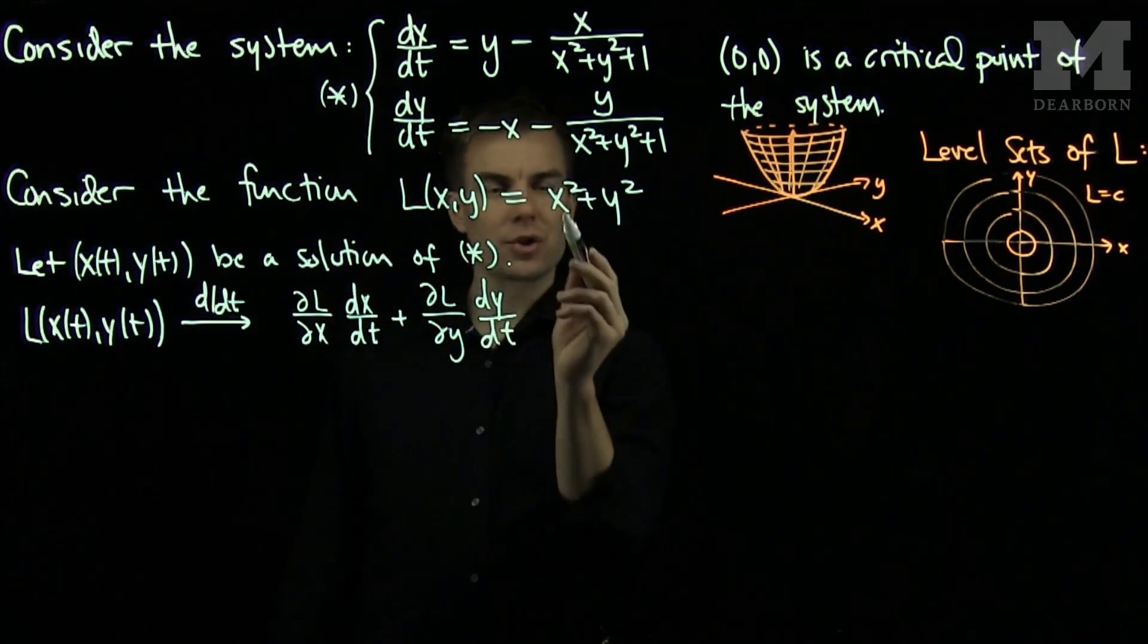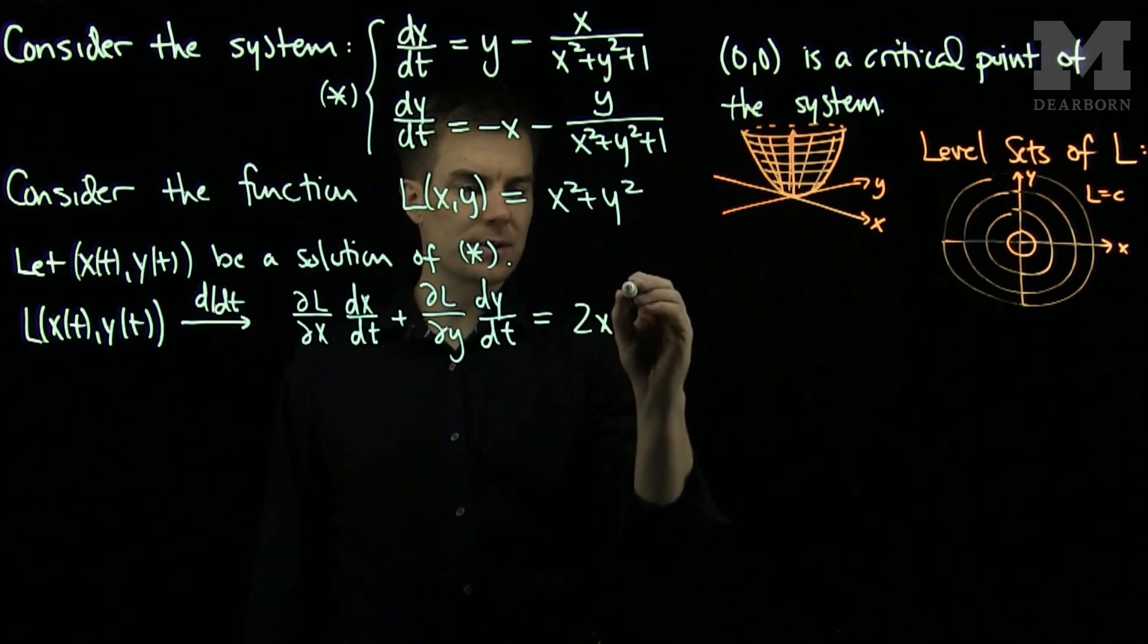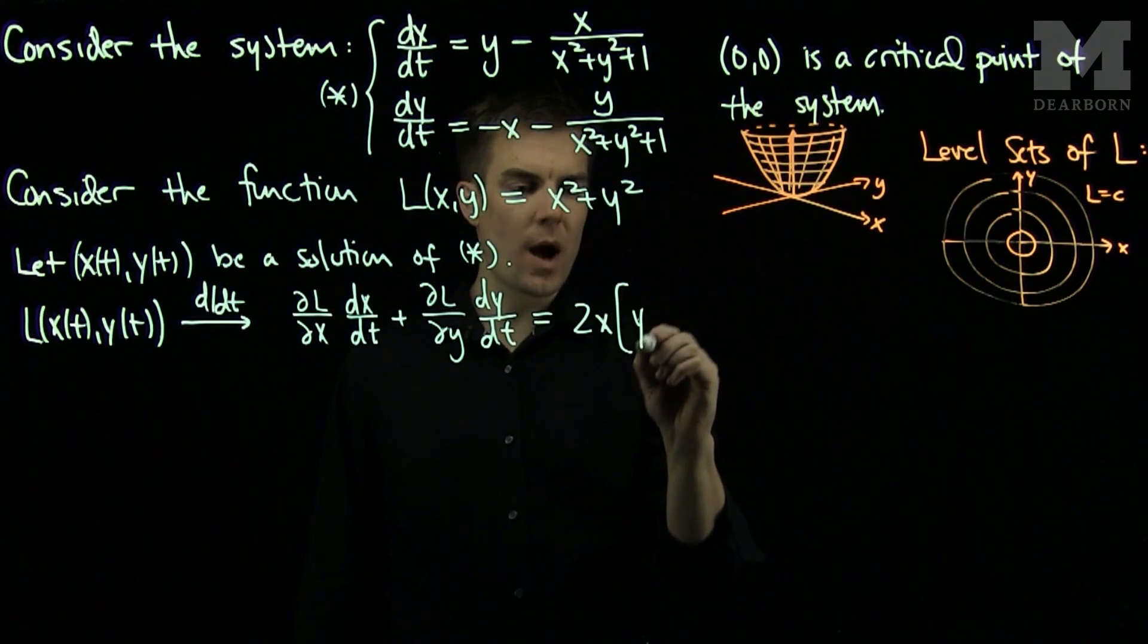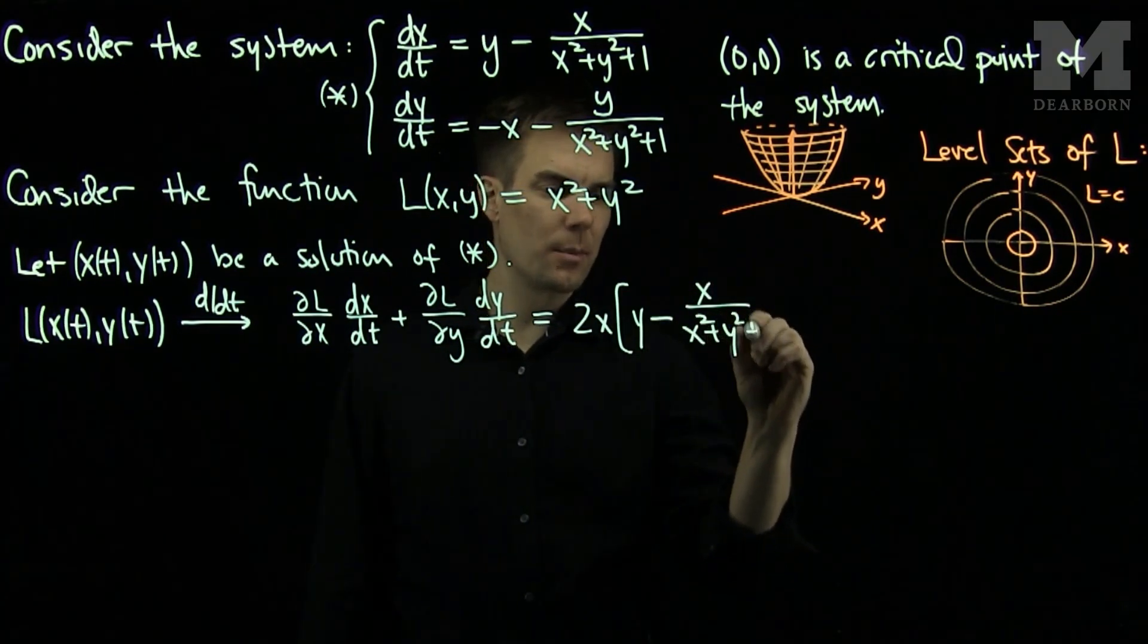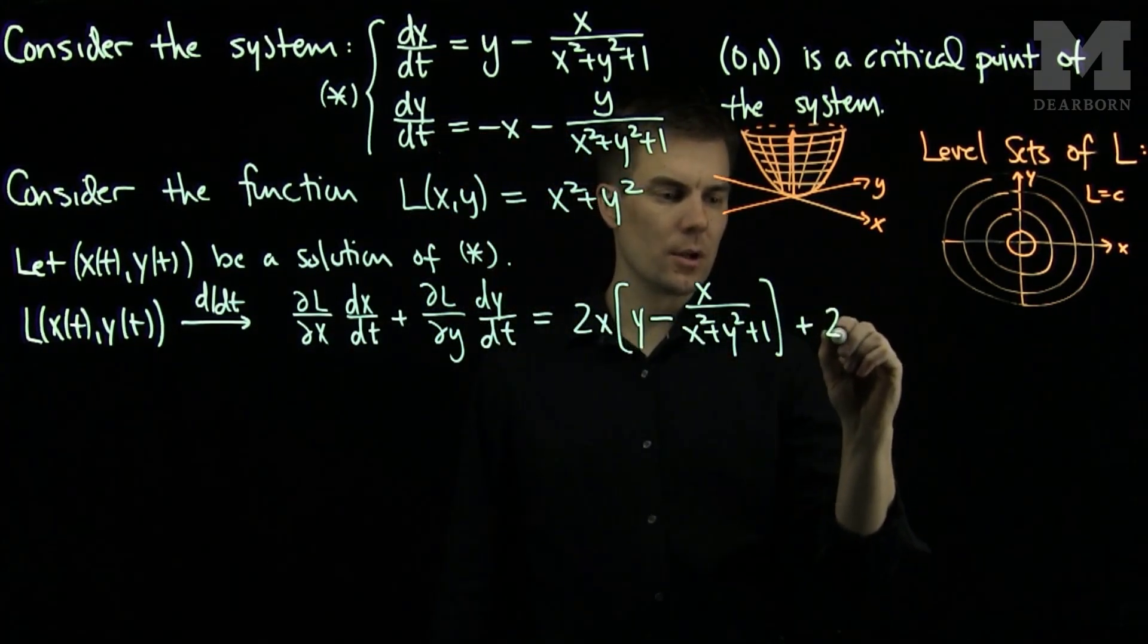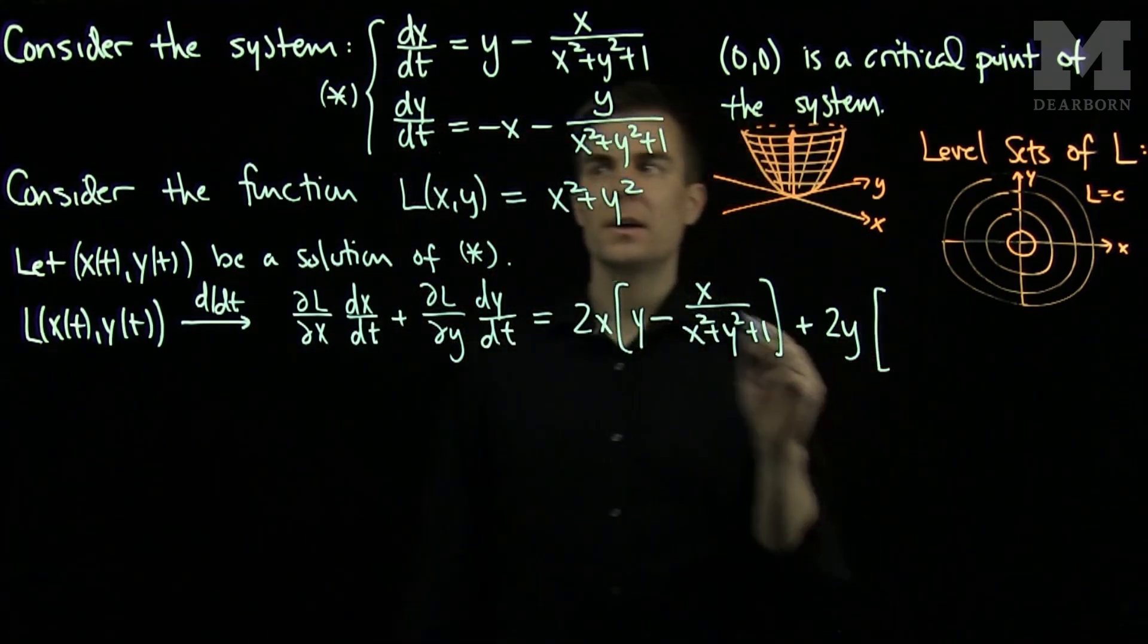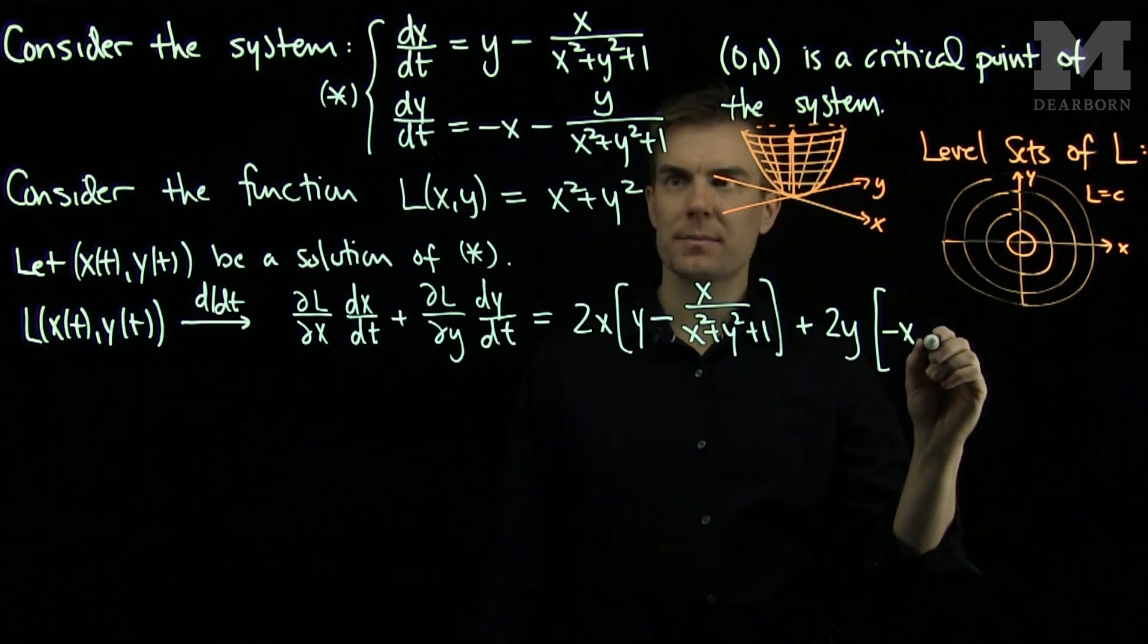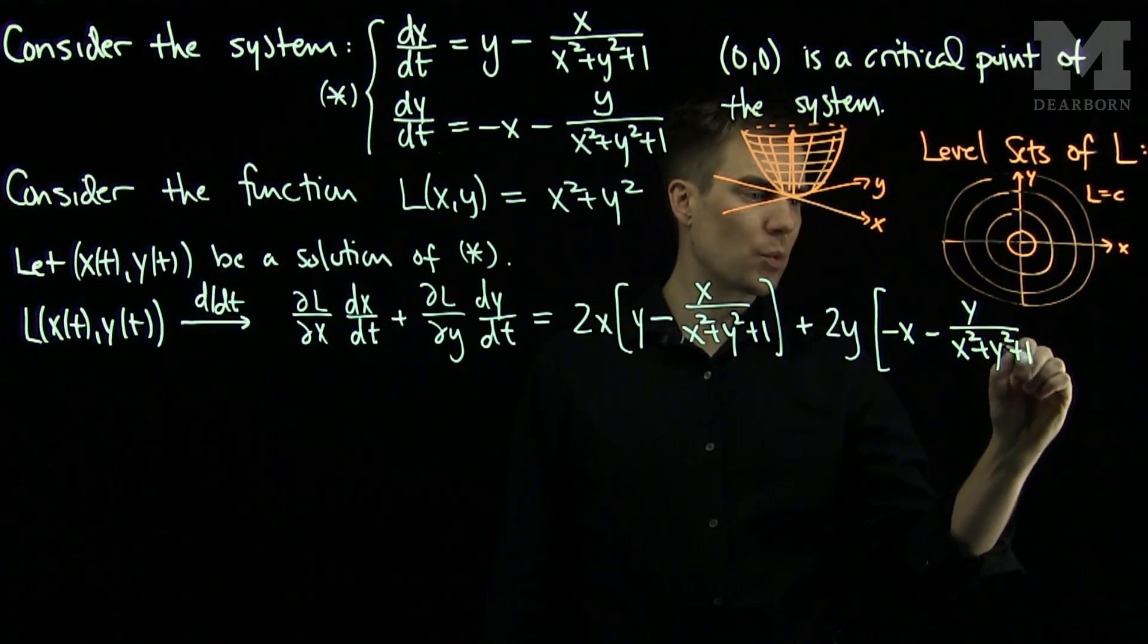∂L/∂x is 2x. So this is 2x. And dx/dt is given by the equation. It is y - x/(x² + y² + 1) plus 2y because ∂L/∂y is 2y times dy/dt. And dy/dt is -x - y/(x² + y² + 1).